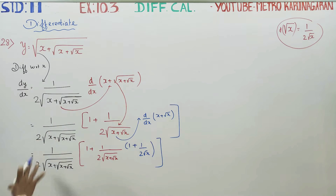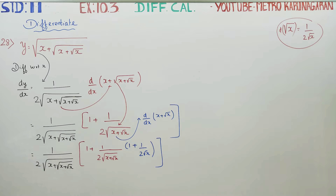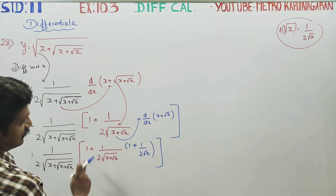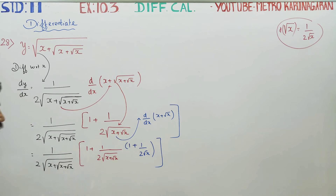Black is the first set of differentiation. Red is the second set of differentiation. Blue is the third set of differentiation. After this, simplification is the job.